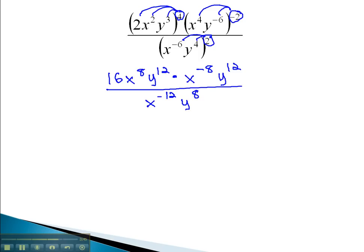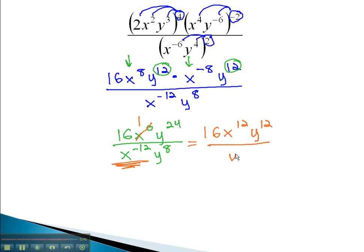Continuing to simplify in the numerator, we can combine our x's together, giving us 16x to the 0, adding the exponents, and combine the y's together, giving us y to the 24th, over x to the negative 12th, y to the 8th. Recall that x to the 0 is 1, and x to the negative 12th needs to move to the numerator. We now have 16x to the 12th, y to the 24th, over y to the 8th.